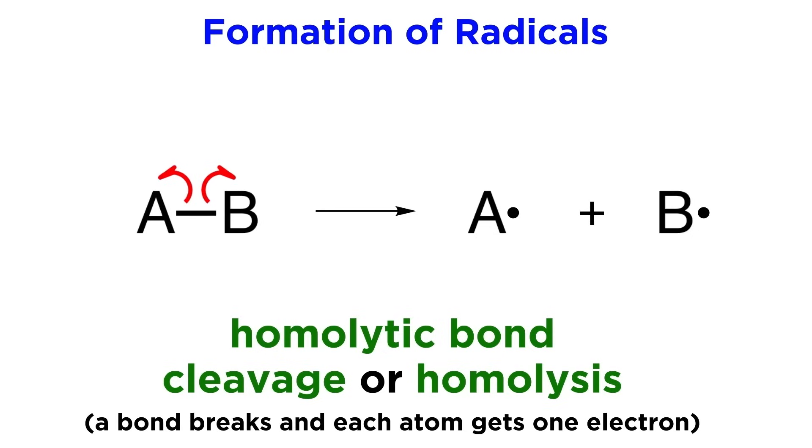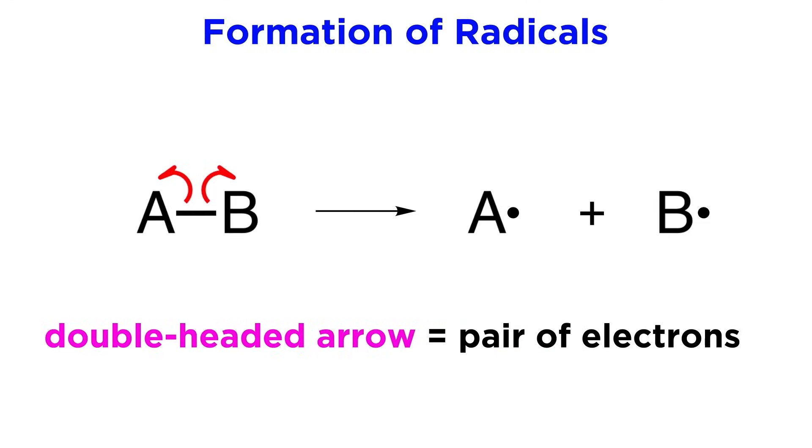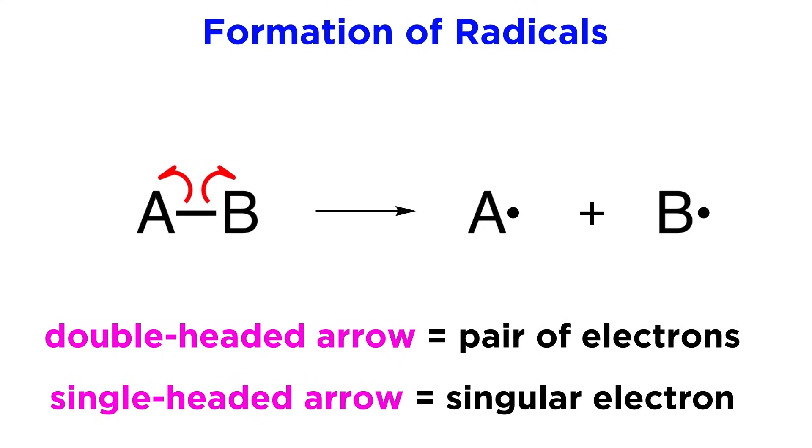This is when a covalent bond breaks, and each of the atoms participating in the bond will get one of the electrons, such as when AB becomes an A radical and a B radical. This activity is indicated by these single-headed arrows. Whereas regular electron-pushing arrows indicate the activity of a pair of electrons, these single-headed arrows indicate the activity of a singular electron. This seems subtle, but it is a very important distinction to make.